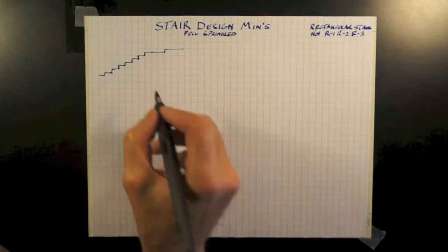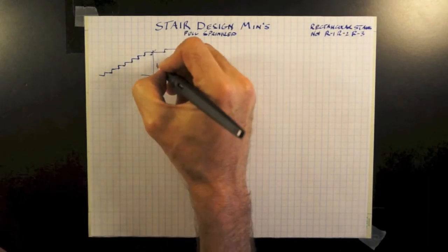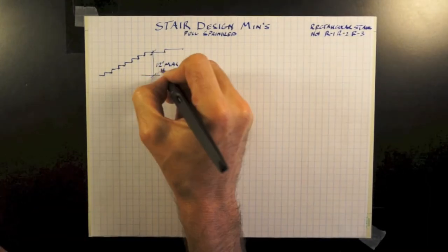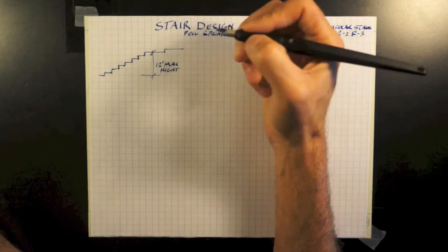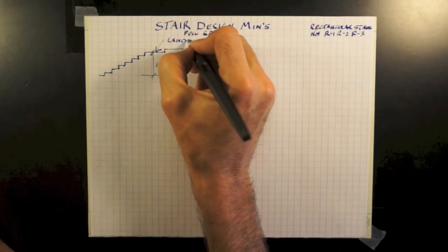One of the first parameters we need to be aware of is our vertical height of a stair cannot be greater than 12 feet without first reaching a floor or a landing.